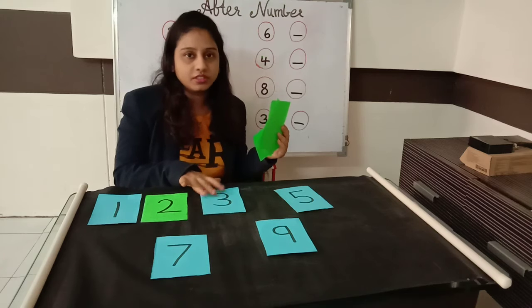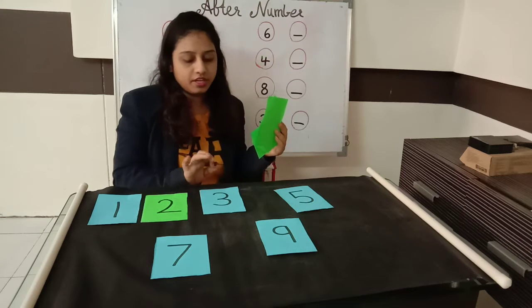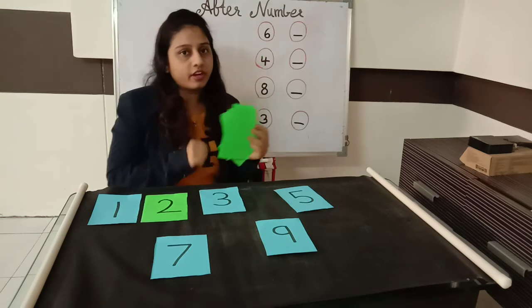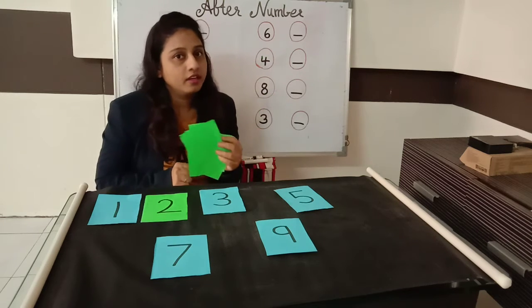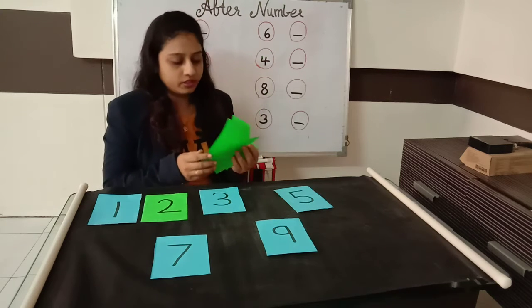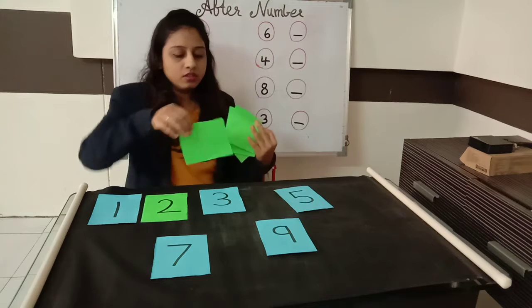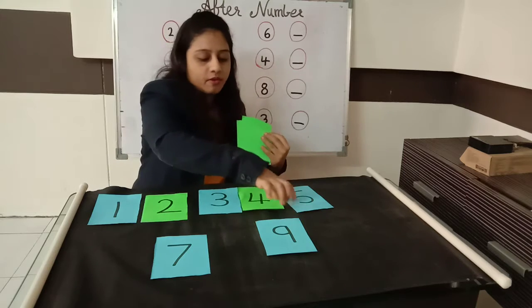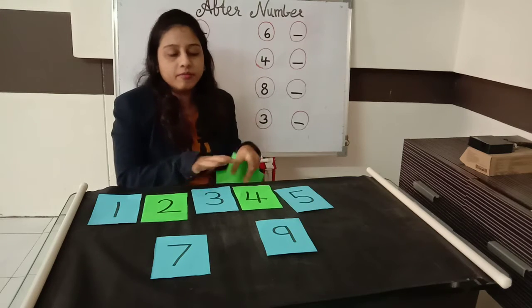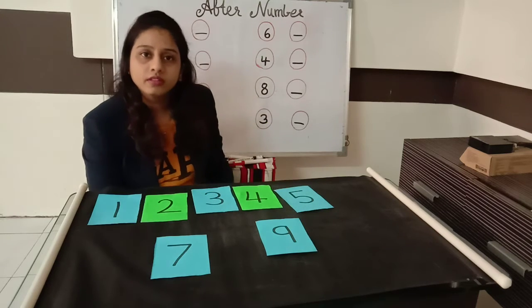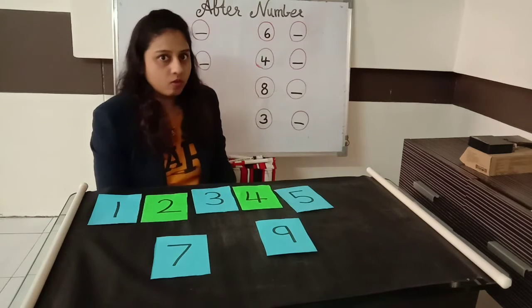Now, which number is this? 3. 3 after what? 4. So this is 4 number — it is the after number of 3.